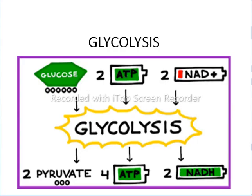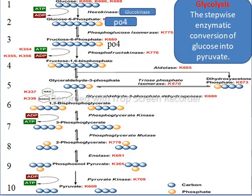Let's discuss each step of glycolysis in detail. Once glucose enters the cell, we have to change it into glucose-6-phosphate through an enzyme called hexokinase, which is present in many muscles and tissues. But glucokinase is specifically present in the liver. These two enzymes are responsible for converting glucose into glucose-6-phosphate.